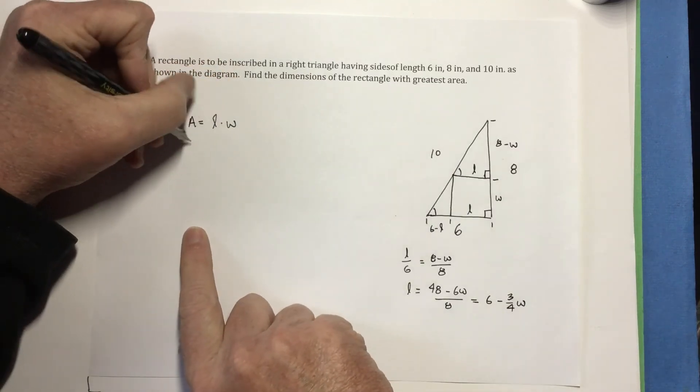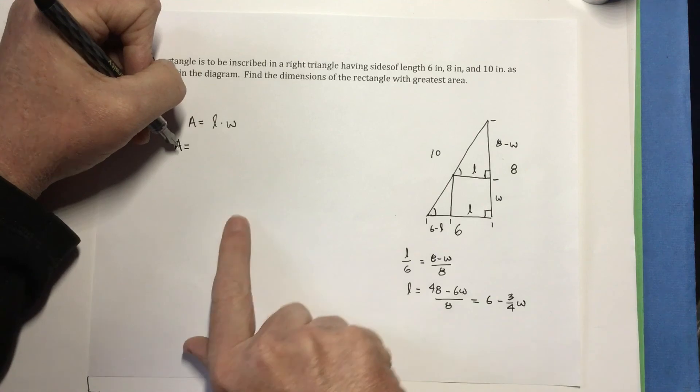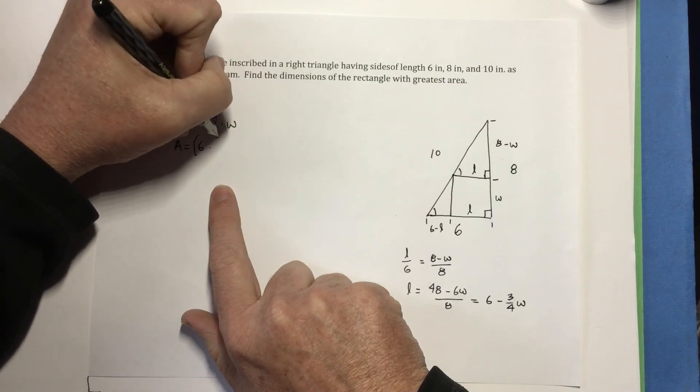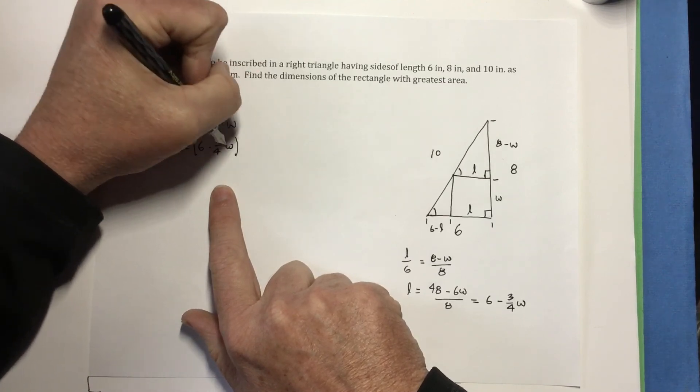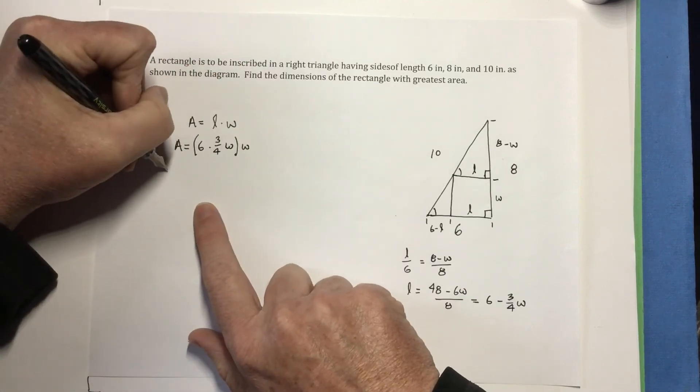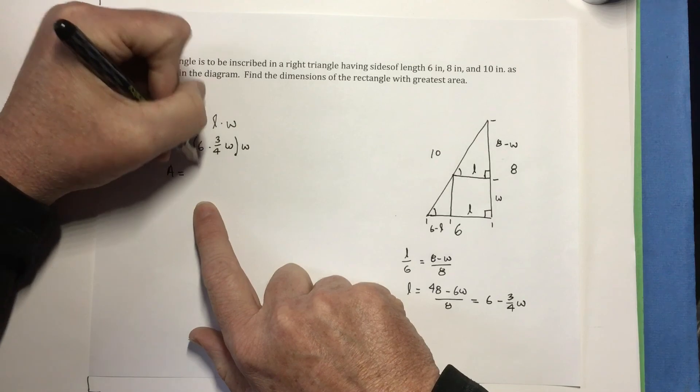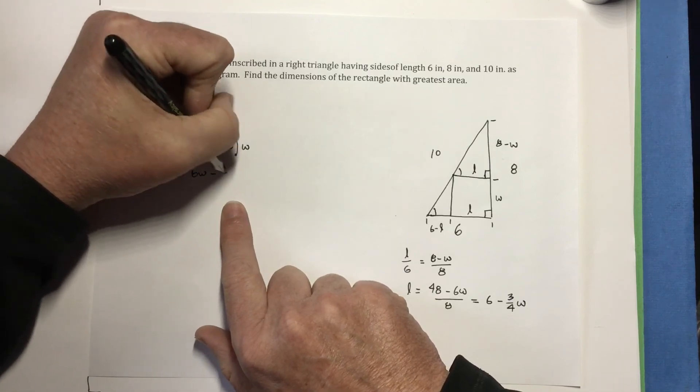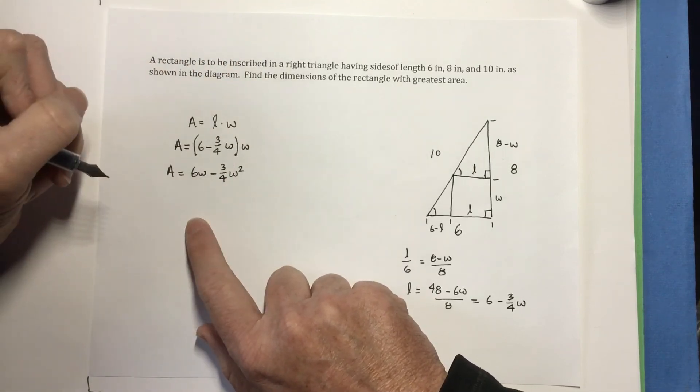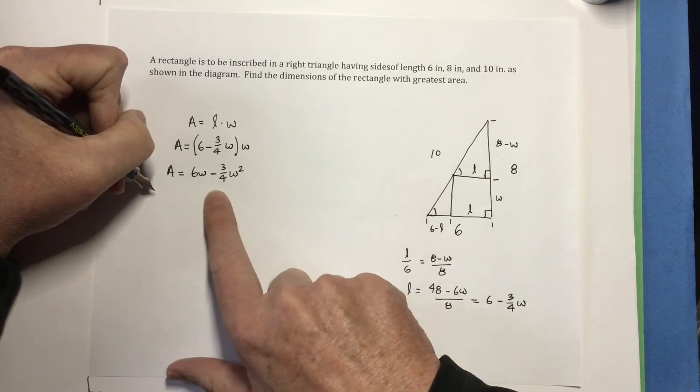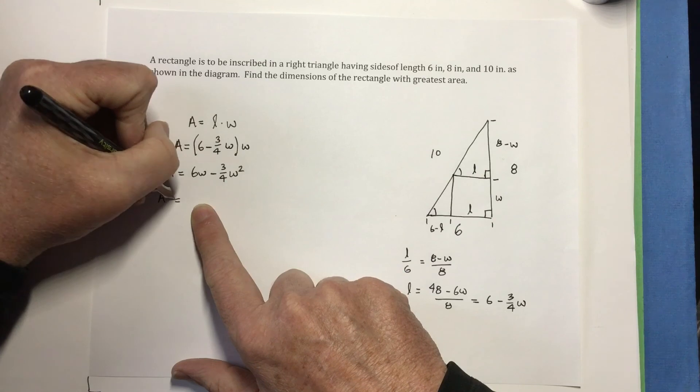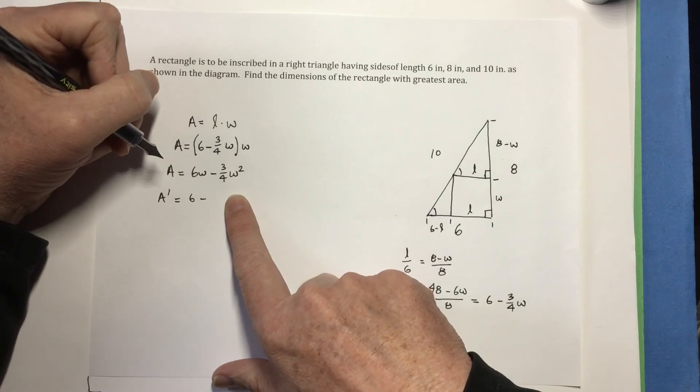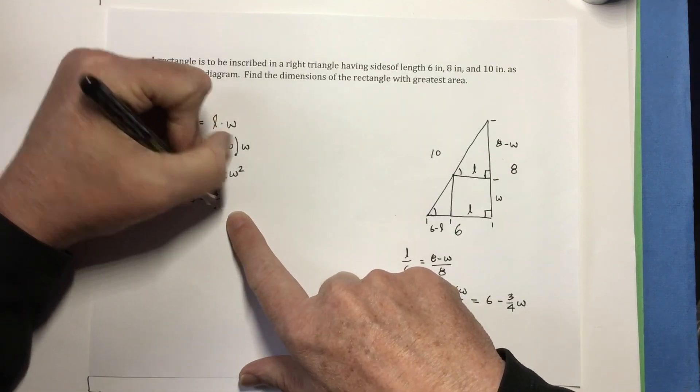So now that means I can rewrite my area in just terms of W. So if L is 6 minus 3 fourths W, then I can say the area I'm interested in is 6 minus 3 fourths W times W. Which means area would be 6W minus 3 fourths W squared. I will now take the derivative of the area, and A prime is going to be 6 minus 2 times 3 fourths W, which is 3 halves W.